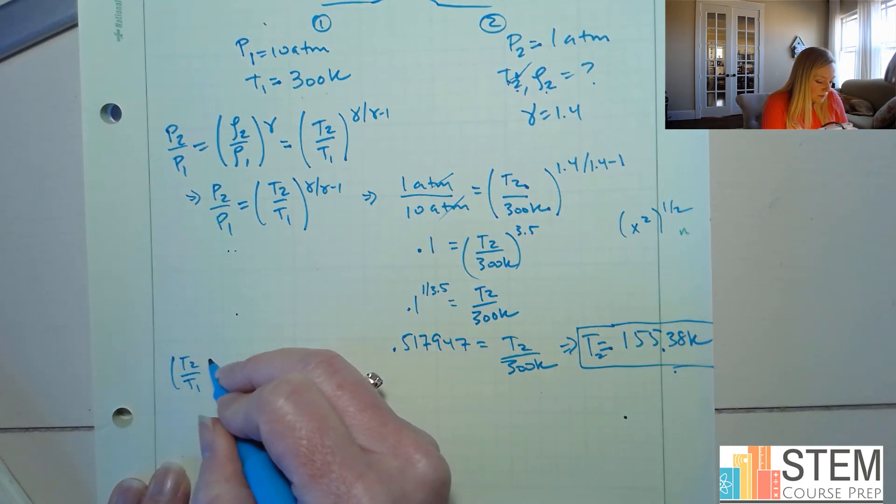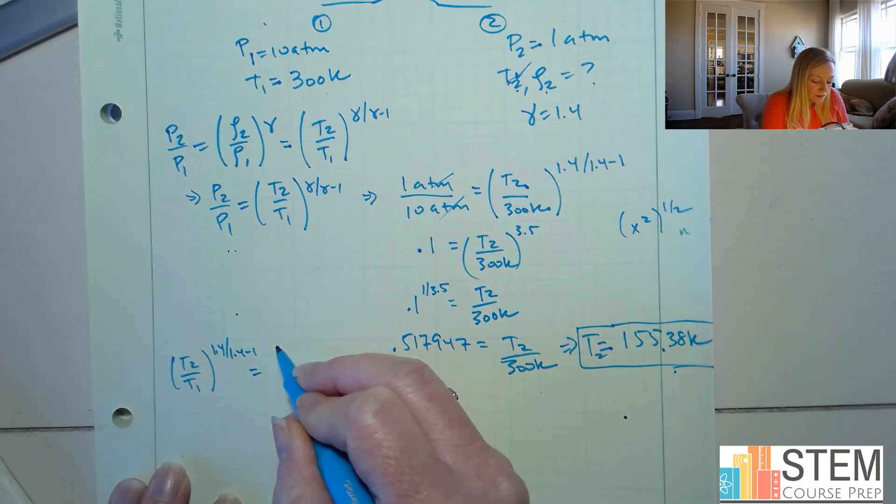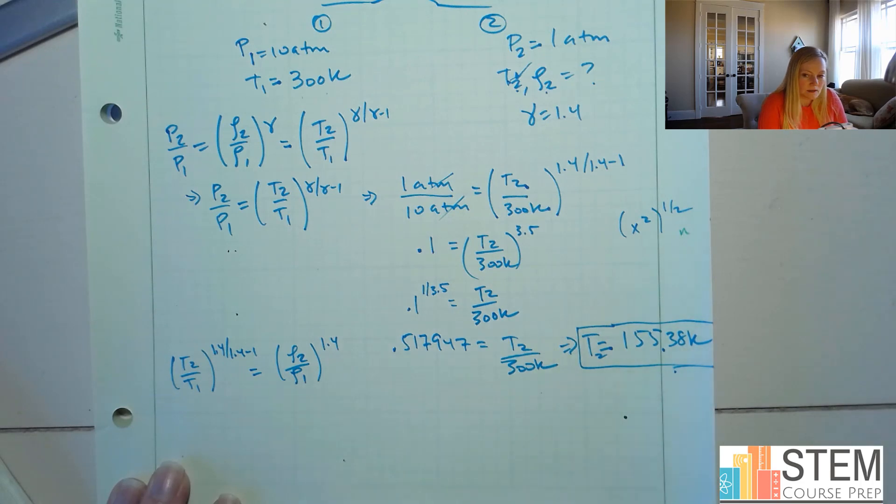Okay, so I've got T2 over T1, and then that's raised to the power of 1.4 over 1.4 minus 1. And then that's going to equal rho2 over rho1 to the power of 1.4. So I already have my temperatures, so let's plug those in.